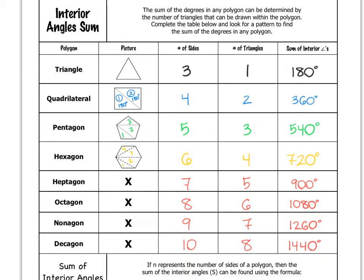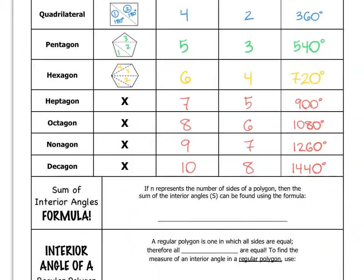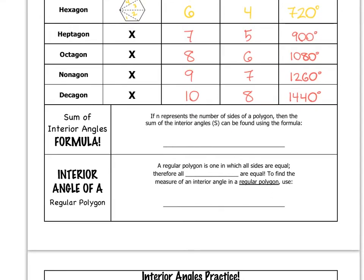So, we can come up with a formula to find the sum of the interior angles in any polygon. That formula is: S, which stands for the sum of the interior angles, is equal to the quantity N — which is the number of sides — minus two, times 180. That formula will tell you the sum of the interior angles for any polygon.